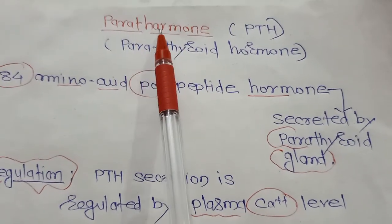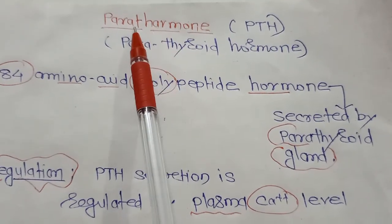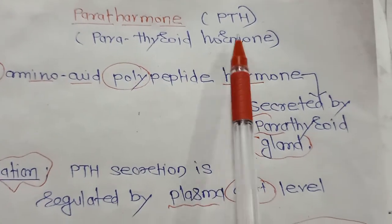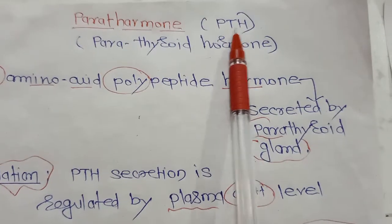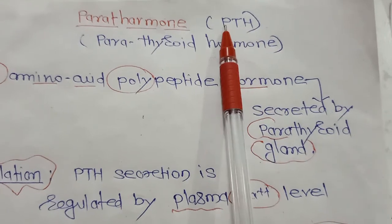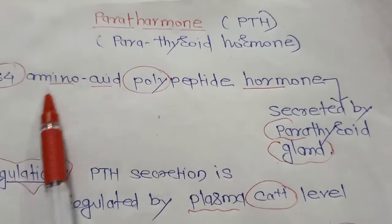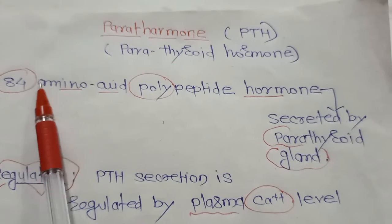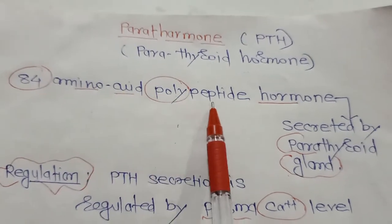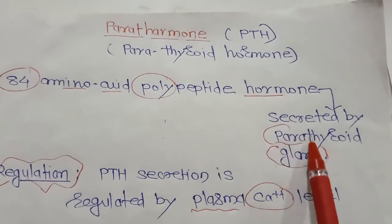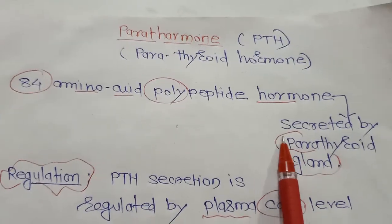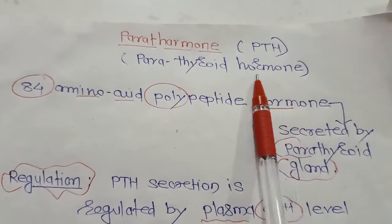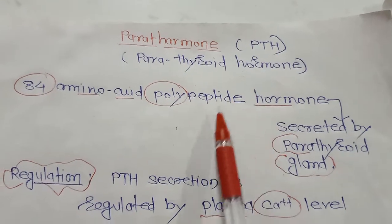Today we are going to discuss parathormone, also called parathyroid hormone or PTH. As the name suggests, it is an 84 amino acid polypeptide hormone which is secreted by the parathyroid gland — that is why it is called parathyroid hormone, parathormone, or PTH.